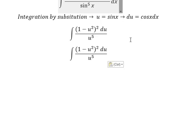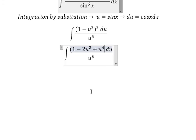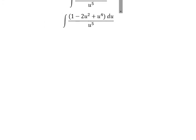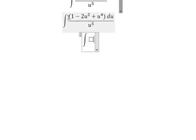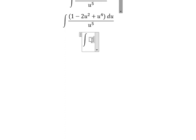About this one we need to expand this one and you got about 1 minus 2u squared plus u to the power of 4. Next we have, next we have 1 divide by u to the power of 5, you got about u to the power of negative 5.